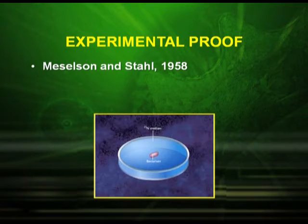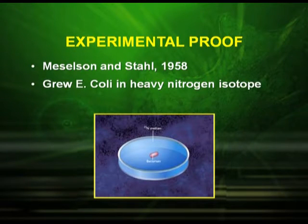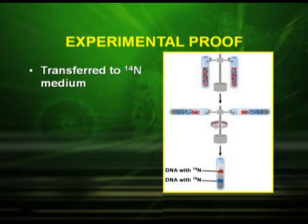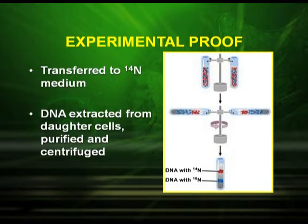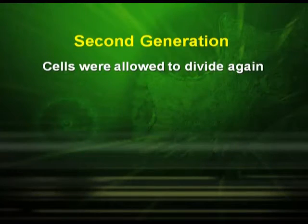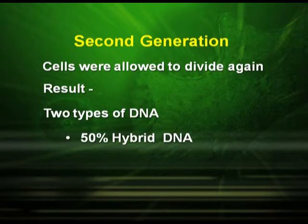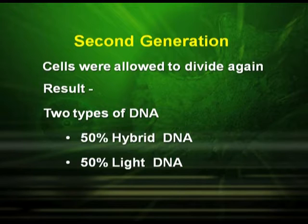The experimental proof of the semi-conservative mode of replication was given by Meselson and Stahl in 1958. They grew E. coli in the heavy nitrogen isotope N15 for many generations, then transferred to N14 medium. The DNA was extracted from daughter cells, purified, and centrifuged. In the second generation, the cells were allowed to divide again. The result: there were two types of DNA — 50 percent hybrid DNA and 50 percent light DNA.